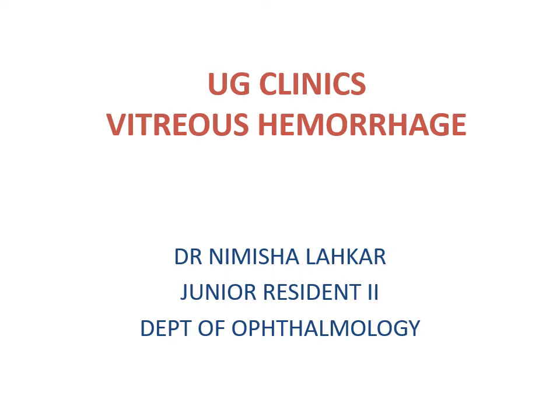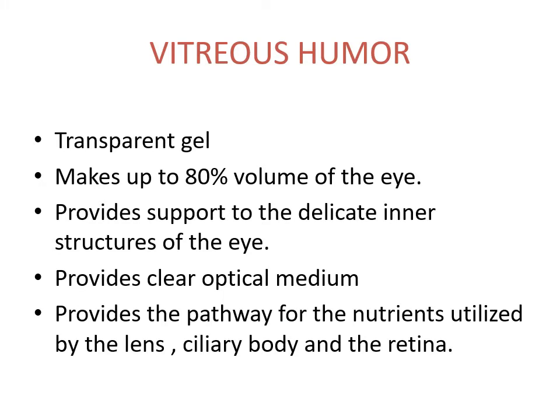Good morning everyone. The topic for today's UG Clinics is vitreous hemorrhage. First, about the vitreous humor: the eye is divided into the anterior segment, in front of the lens, and the posterior segment, behind the lens. The anterior segment is filled with the aqueous humor, whereas the posterior segment is filled with the vitreous humor. The volume of vitreous humor is 4 ml, and its consistency is gel-like — it is a transparent gel making up 80% of the volume of the eye.